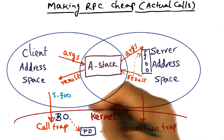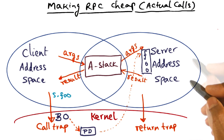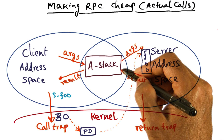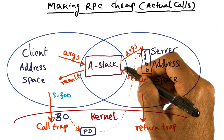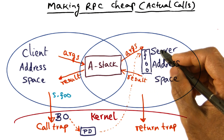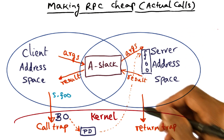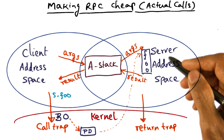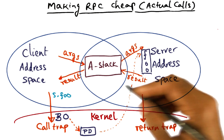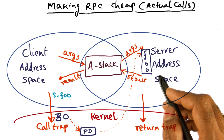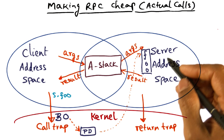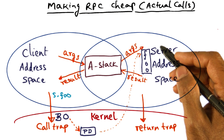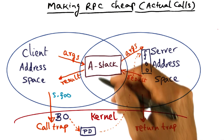When we go from the client address space to the server address space, we are touching some part of the address space. The address space content will be in physical memory and therefore in the caches of the processor. But there's a lot of stuff that may not be in the caches of the processor, so there is going to be a loss of locality due to the domain switch — in the sense that the caches in the processor may not have all the data that the server needs in order to do its execution.